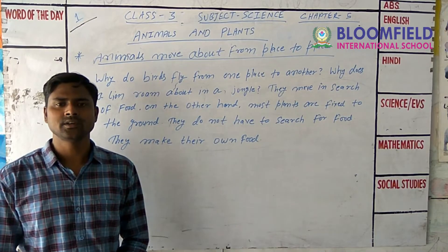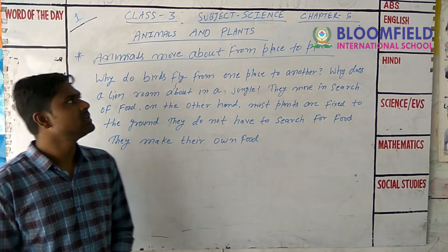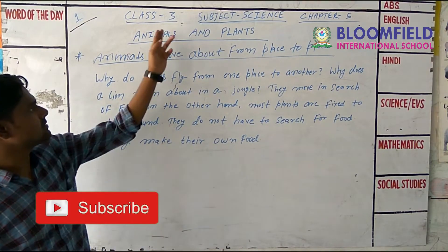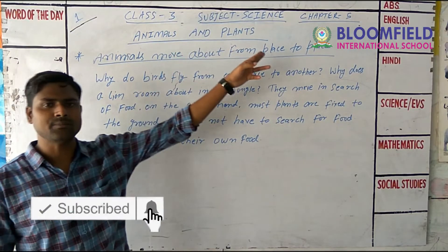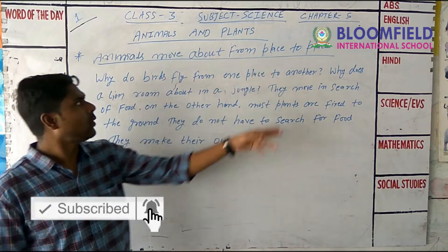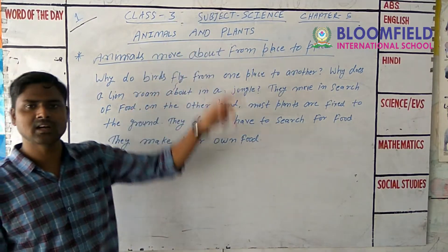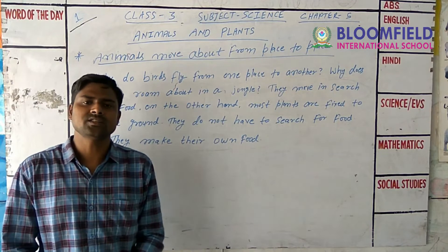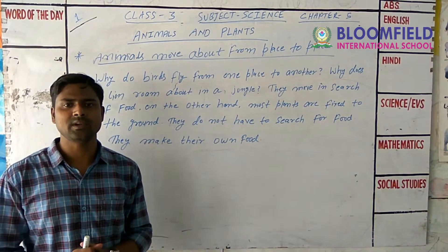Good morning, students. Today we are going to learn about Sunday science, Class 3, Chapter No. 5: Animals and Plants. So students, we are going to learn about Animals and Plants.